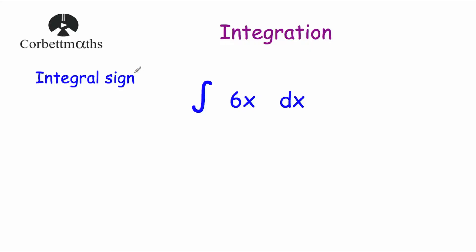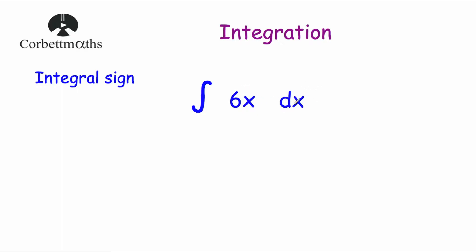Now let's look at what we call the integral sign. This is an elongated s — the integration symbol. If I read this notation: the integral symbol means integrate, then what comes after it is what you're integrating. Sometimes it's inside a bracket. And then you've got letters on the end — it'll always have a d and then another letter, which is what you're integrating with respect to. In this question we're dealing with x's and integrating with respect to x. Later in this video you'll see situations where we integrate with respect to t or another variable.